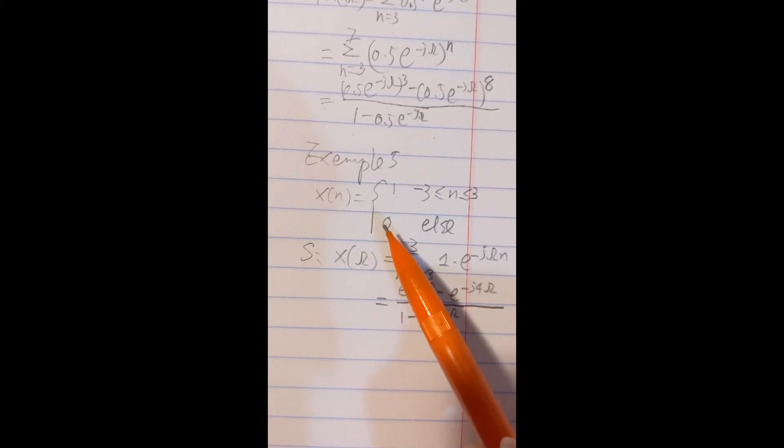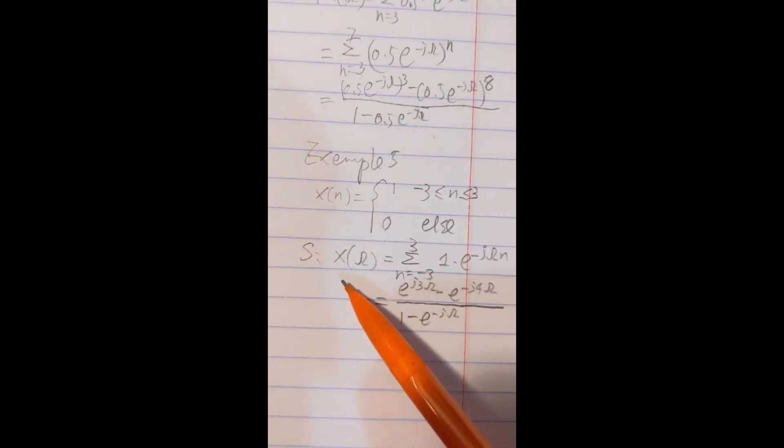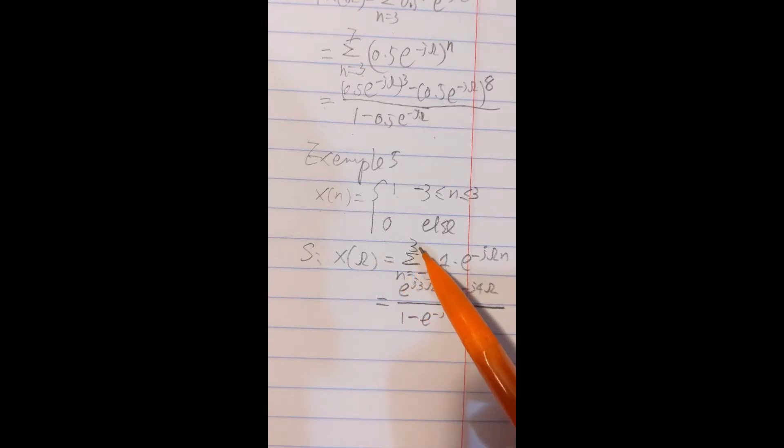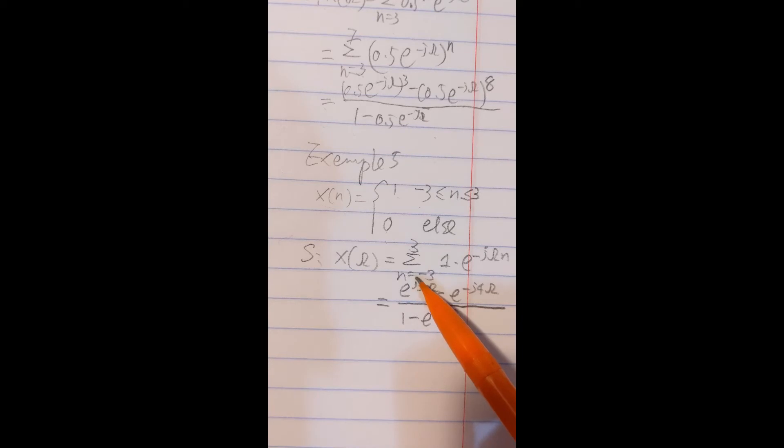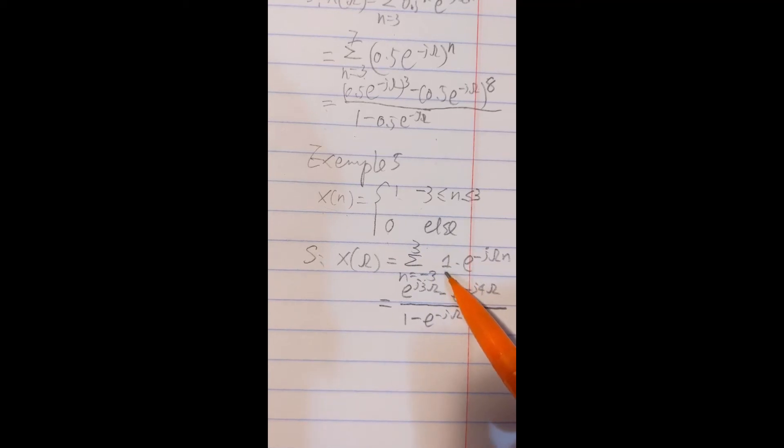So this is how we calculate DTFT. I calculate by using the definition. We only care about those numbers, those time index has value. So from minus three to three my value is one.